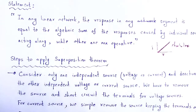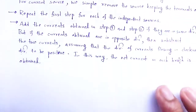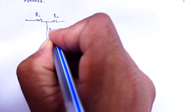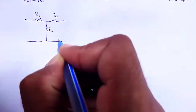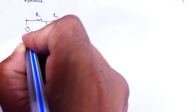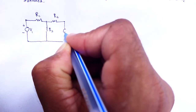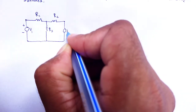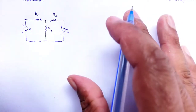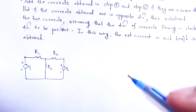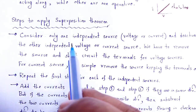Now looking at an example of an electrical network, and how we apply superposition theorem to that network. There will be a network with R1, R2, R3, one voltage source V1 and another voltage source V2.